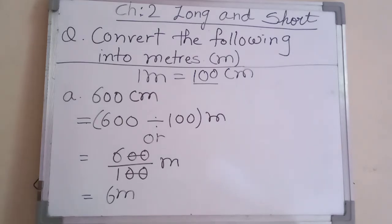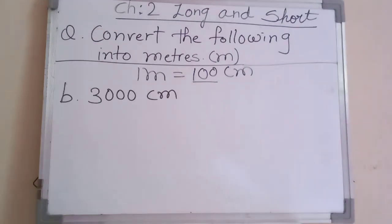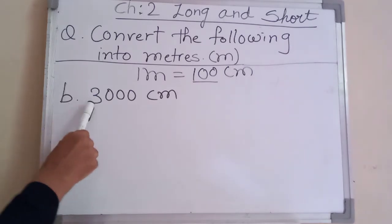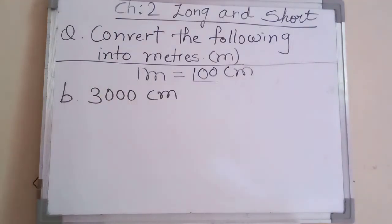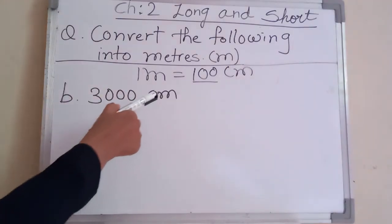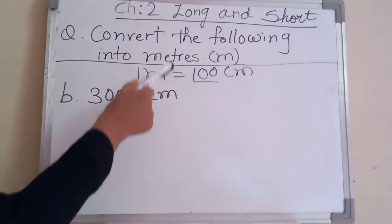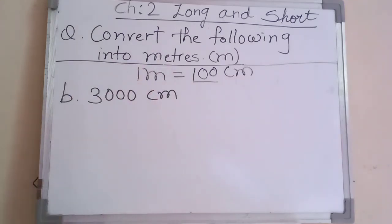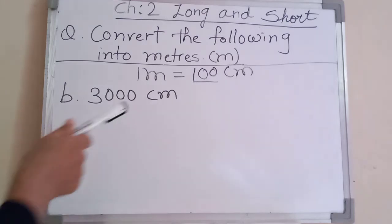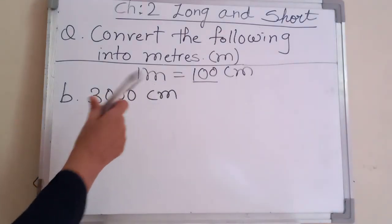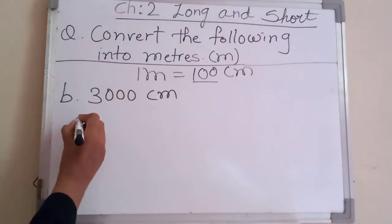Let's see the next example. Our second example is three thousand centimeter, converted into meter. It's the same: centimeter to meter is smaller unit to bigger unit, so we do division by hundred.